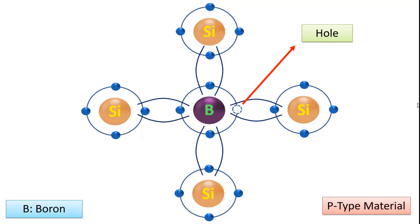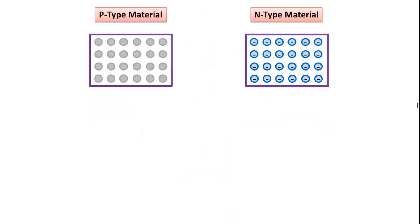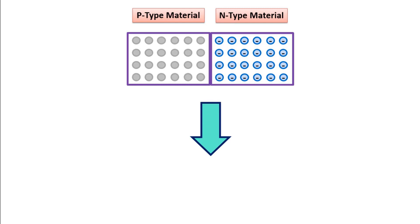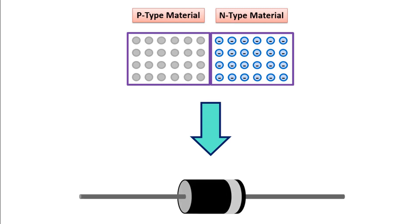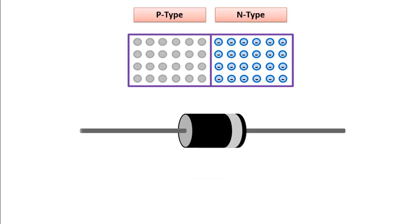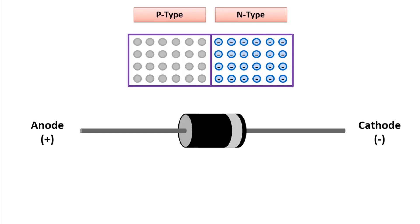For better understanding, we can show the p-type material with hollow circles and the n-type material with filled circles with a minus inside. If we combine p-type and n-type materials, a diode — the most basic circuit element of electronics — is formed. The p-type part of the diode is called the anode and the n-type part is called the cathode. There is a white stripe on the cathode. The circuit symbol is like this — indicated with a stripe on the cathode part in the form of a triangle.